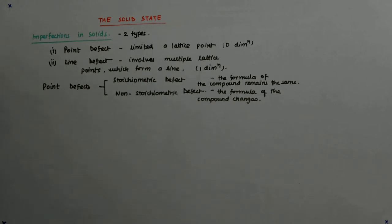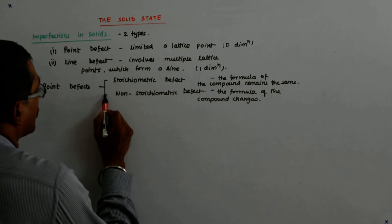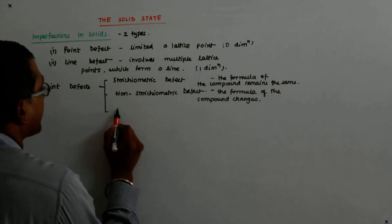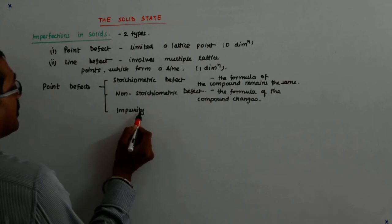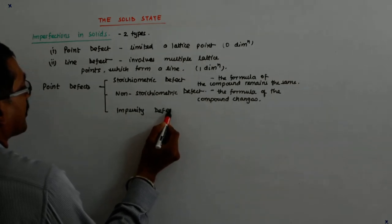The compound defects are stoichiometric, non-stoichiometric, and impurity defects. There is the third category called the impurity defect.